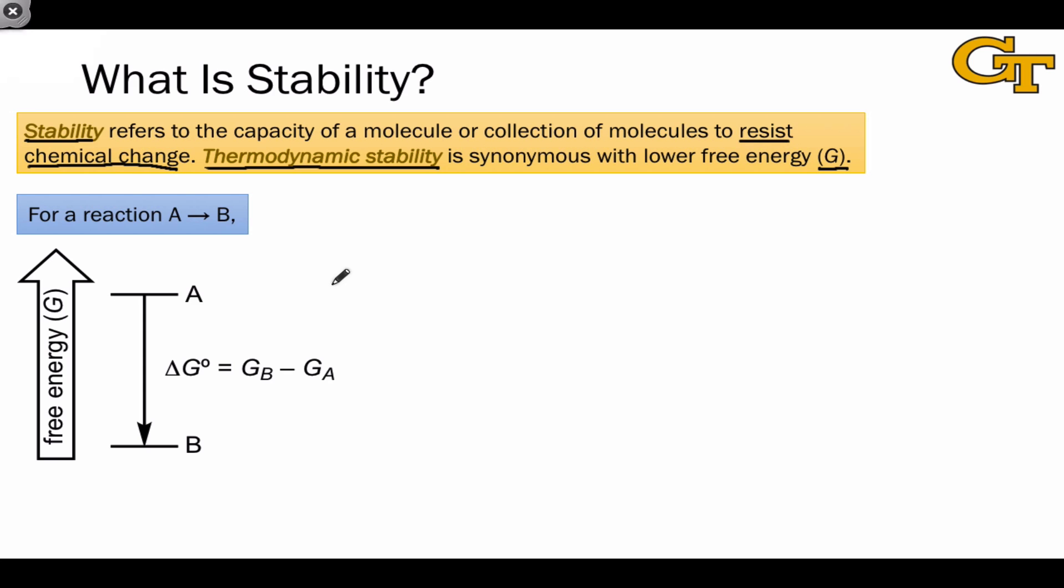Recall that for a hypothetical reaction with reactants A and products B, we can define the change in free energy, here the standard free energy change is indicated by this little circle, as the difference in free energy between the products and the reactants. And if the free energy change is negative, as it is in this case, the free energy is going down, we refer to the process as spontaneous.